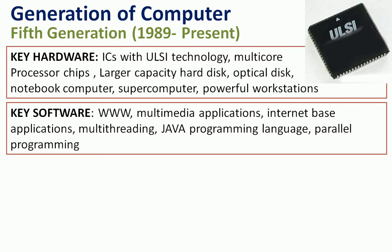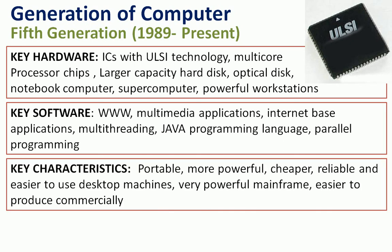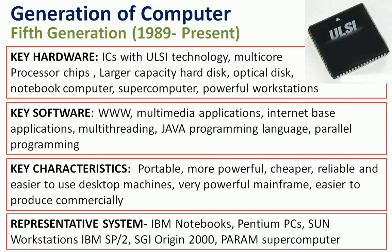The softwares include World Wide Web, multimedia applications, internet based applications, multi-threading, Java programming language, and parallel programming. The characteristics are portable, more powerful, cheaper, reliable, and easier to use desktop machines, very powerful mainframe, and easier to produce commercially. The representative systems are IBM Notebooks, Pentium PCs, Sun Workstations, IBM SP2, SGI Origin 2000, and Param supercomputer.